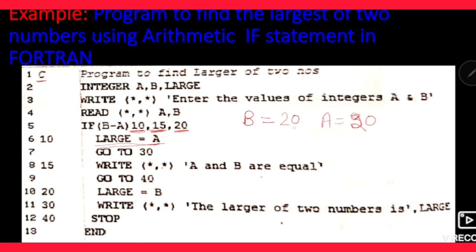Agar hum B ko 20 lein aur A ko 10 lein, to B minus A ki value 10 aayegi — that will be positive. To agar positive aayegi to control will be passed to statement number 20. Statement number 20 mein large is equal to B. Agar inka difference positive aata hai to matlab B greater hai — kyunki B minus A positive kab aayega? Jab B greater hoga. To large variable B ki value store karega, because B is large now. Aur iske baad automatically agle statement execute hogi. Yahan GO TO 30 nahi likha, kyunki isse next statement 30 hi hai — wo apne aap execute hogi hi.